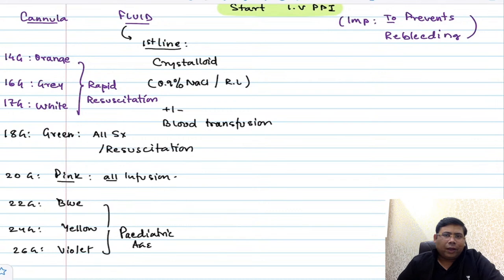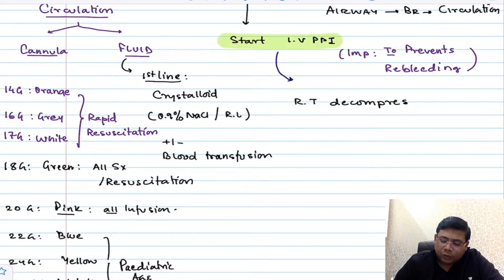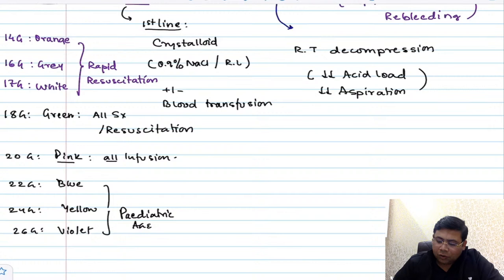Once you start with IV PPIs, the next line of management is Ryle's tube insertion and Ryle's tube decompression. Why do we want Ryle's tube decompression? To reduce the acid load, to reduce the risk of aspiration, and also it has an advantage of bedside assessment. Once you do Ryle's tube decompression, the moment the patient is hemodynamically stable, go for upper GI endoscopy.